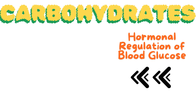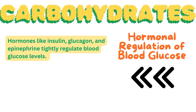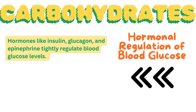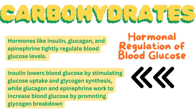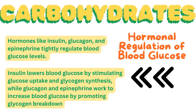Insulin, glucagon, and epinephrine tightly regulate blood glucose levels. Insulin lowers blood glucose by stimulating glucose uptake and glycogen synthesis, while glucagon and epinephrine work to increase blood glucose by promoting glycogen breakdown.